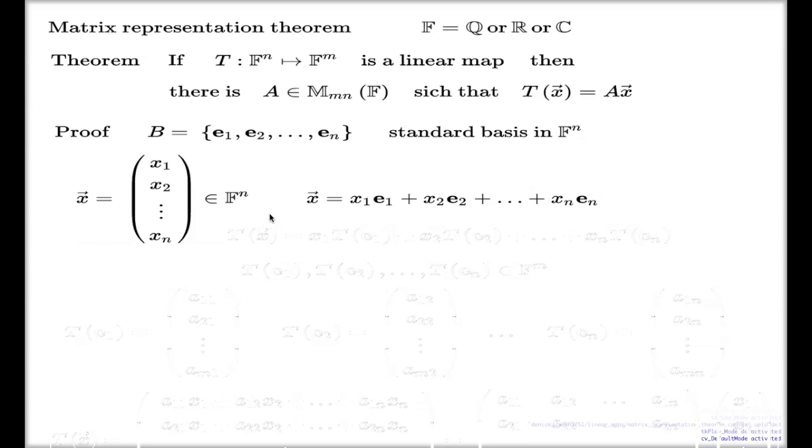If I now apply my linear map to my vector x, because it's a linear map, I can use the linearity and convert this T(x) into the expression like this: x_1 times T(e_1), x_2 times T(e_2), x_n times T(e_n). It's one of the first properties of the linear maps we discussed with you.